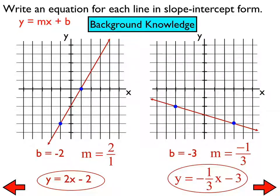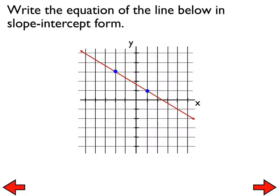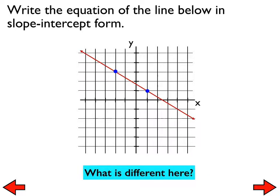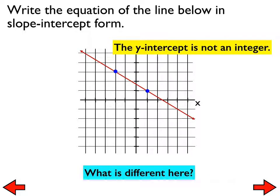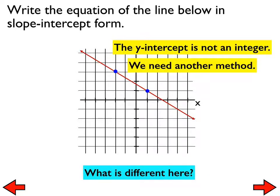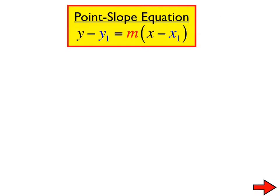But what's different about this graph compared to the others? The y-intercept is not an integer. So how are we going to figure out the equation of that line? That's where we need another method — the point-slope equation.